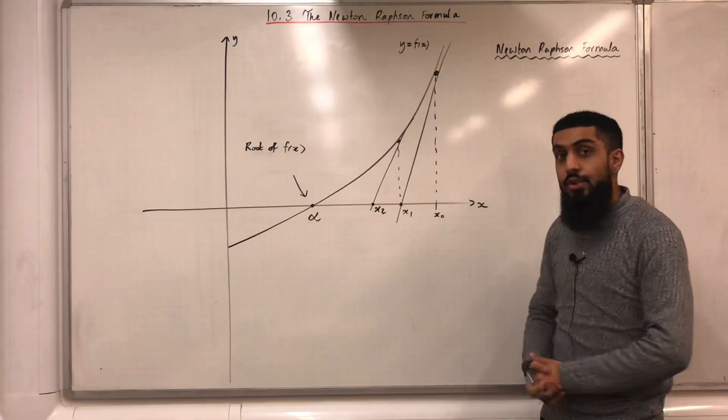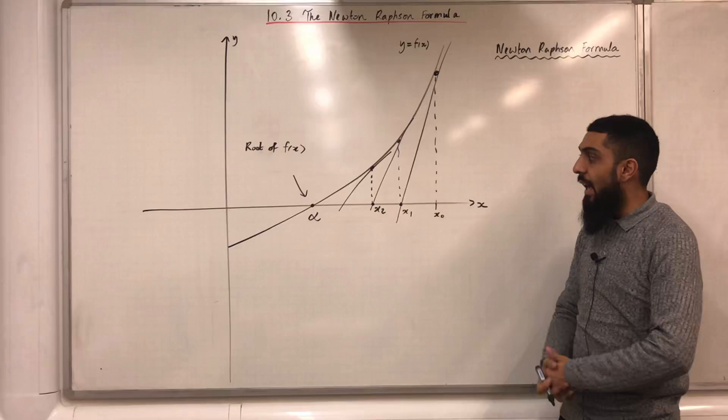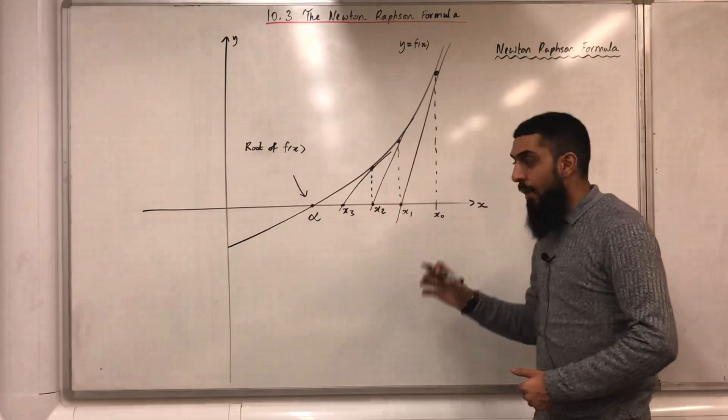Now, I'm going to draw a tangent to the curve y equals f(x) at the point x2. The x-intercept of this tangent, we label it as x3. As you can see, I am getting closer and closer to the root of f(x), which is alpha.